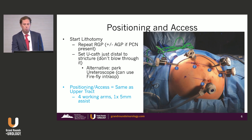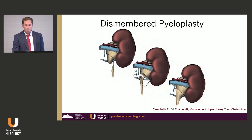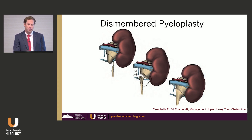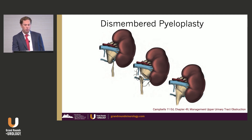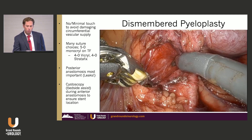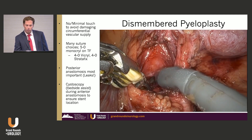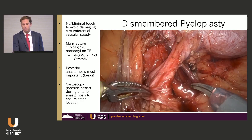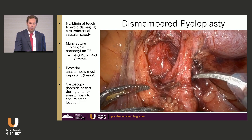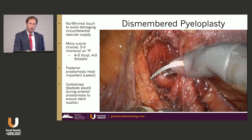You can use the light from the ureteroscope under Firefly, which can sometimes help with localization. The classic Anderson-Heinz dismembered pyeloplasty — as most have seen from Campbell's — involves a crossing vessel that has pushed your UPJ posteriorly. You make an incision, transpose the ureter anteriorly, and put it back together. In this video, we have our lower pole artery dissected out, and we can see where there's an obstruction as we come across the ureter.